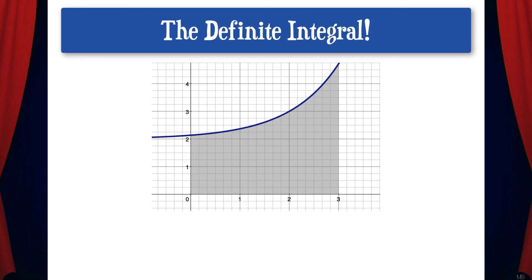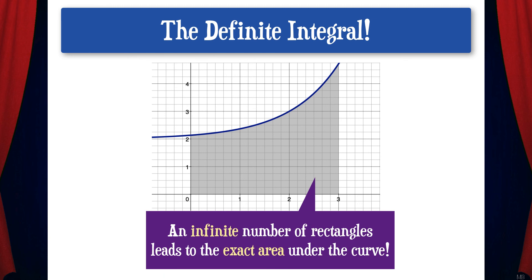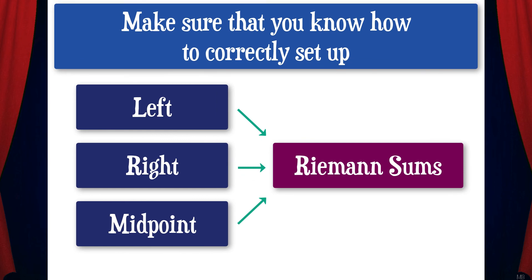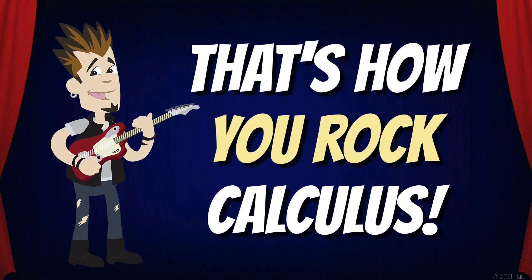As mentioned earlier, if we use more rectangles we'll get a better approximation of the actual area under the curve. And if we use an infinite number of rectangles, we'll get the exact area under the curve — the exact definite integral. In a future video, we'll continue talking about determining a definite integral by finding the sum of the areas of an infinite number of rectangles. For now, make sure you know how to correctly set up left, right, and midpoint Riemann sums. And that's how you rock calculus!